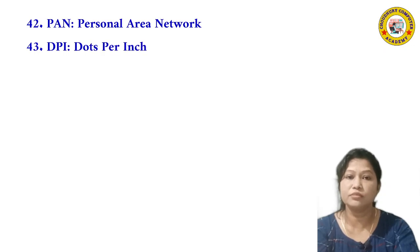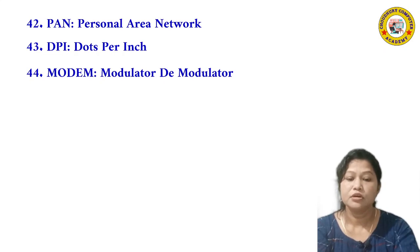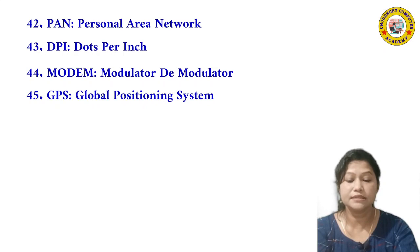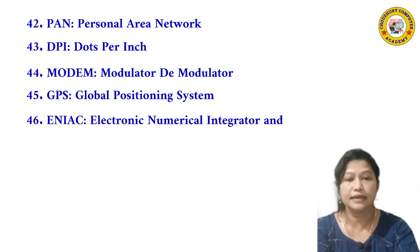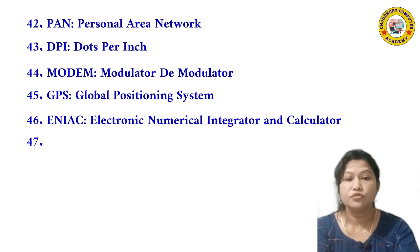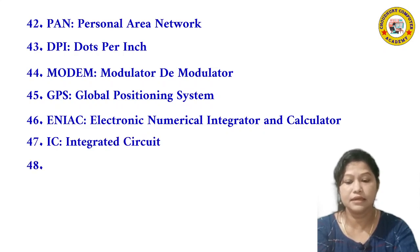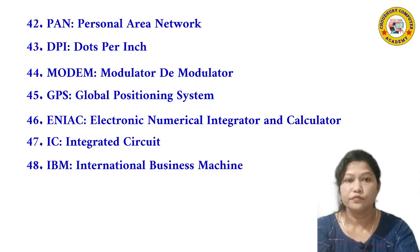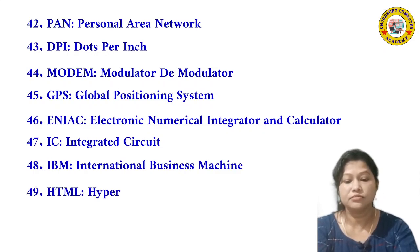Number 42: PAN — full form is Personal Area Network. Number 43: DPI — full form is Dots Per Inch. Number 44: Modem — full form is Modulator Demodulator. Number 45: GPS — full form is Global Positioning System. Number 46: ENIAC — full form is Electronic Numerical Integrator and Calculator. Number 47: IC — full form is Integrated Circuit. Number 48: IBM — full form is International Business Machine. Number 49: HTML — full form is Hypertext Markup Language.